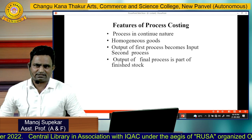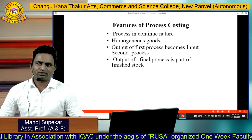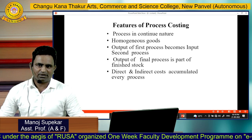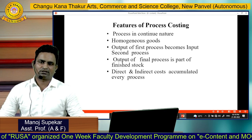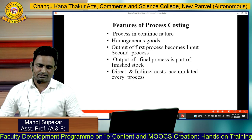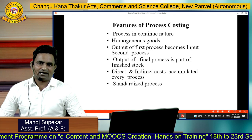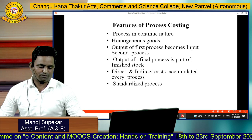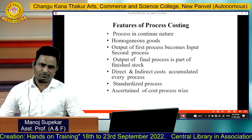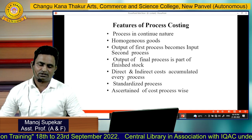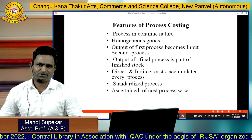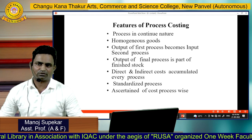Another feature is that the output of the final process becomes part of the finished stock. In process costing, direct and indirect costs are accumulated in every process — that is, prime cost and overheads are combined. A standardized process should be there, and the cost is ascertained process-wise according to how the goods are manufactured, depending on the nature of the goods.